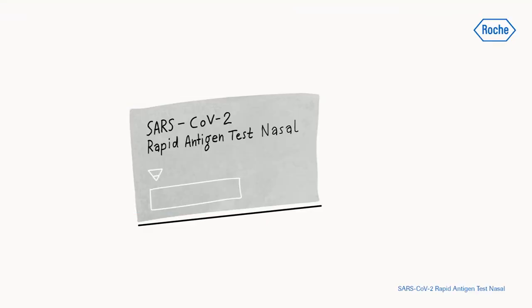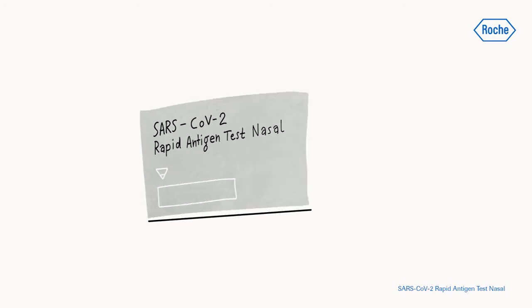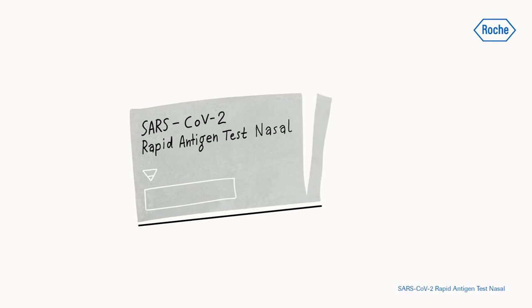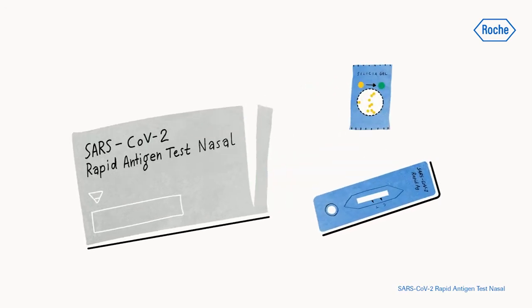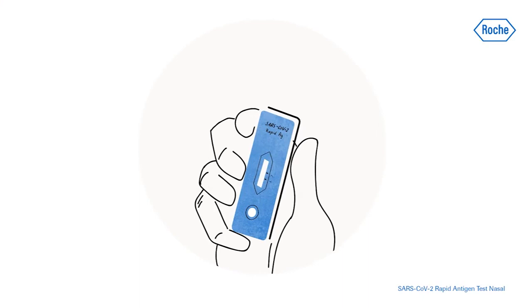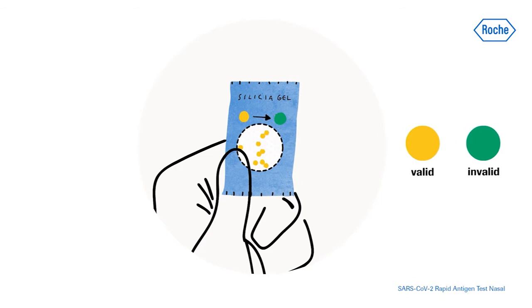For each test, check the expiry date on the back of the foil pouch. Do not use the test if the expiry date has passed. Open the foil pouch and remove the test device and the desiccant package. Ensure that the test device is undamaged and that the desiccant status indicator is yellow.